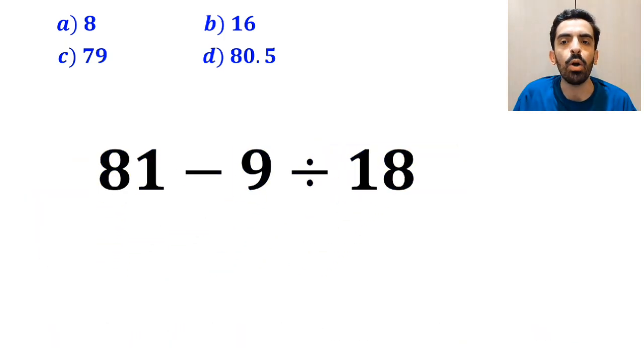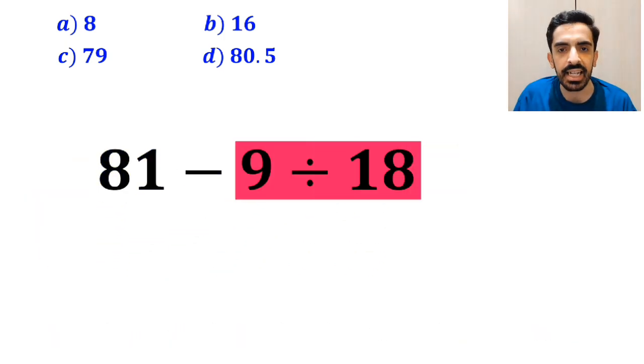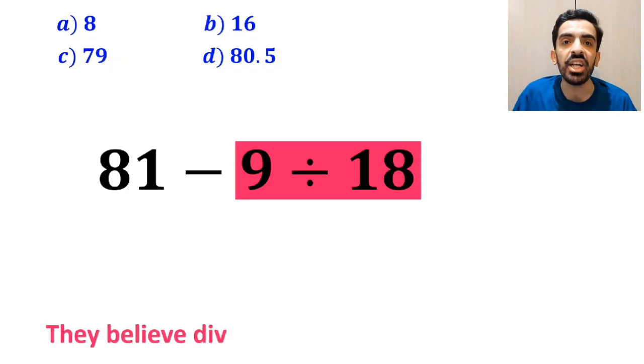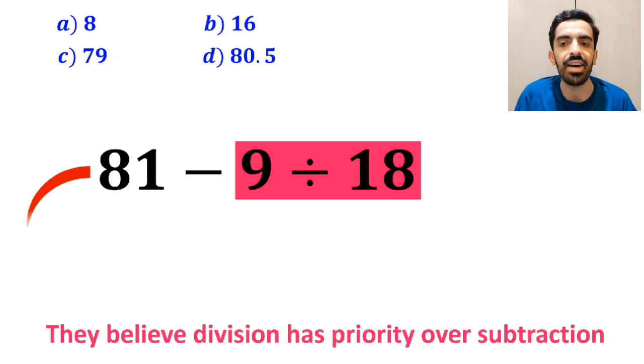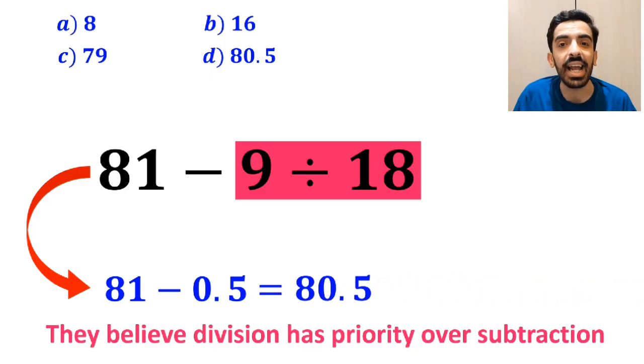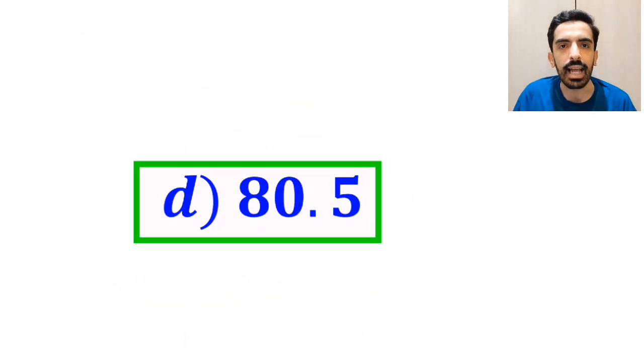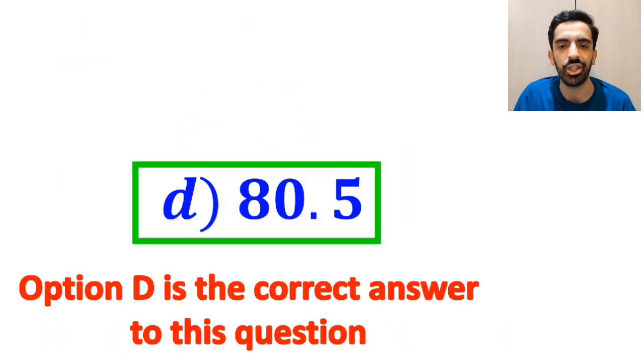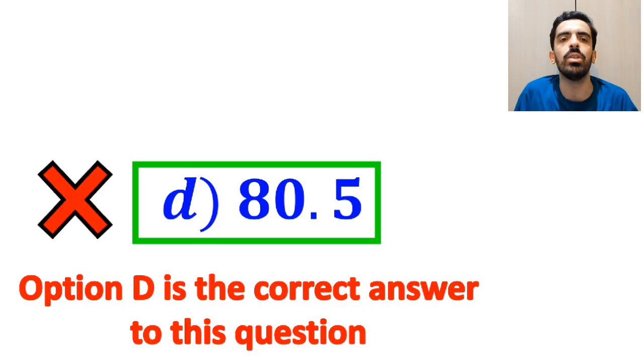Next, they perform the division between 9 and 18, since they believe division has priority over subtraction, and rewrite this expression as 81 minus 0.5, which ultimately gives them the answer 80.5. And immediately, they conclude that option D is the correct answer to this question. However, this answer is absolutely wrong.